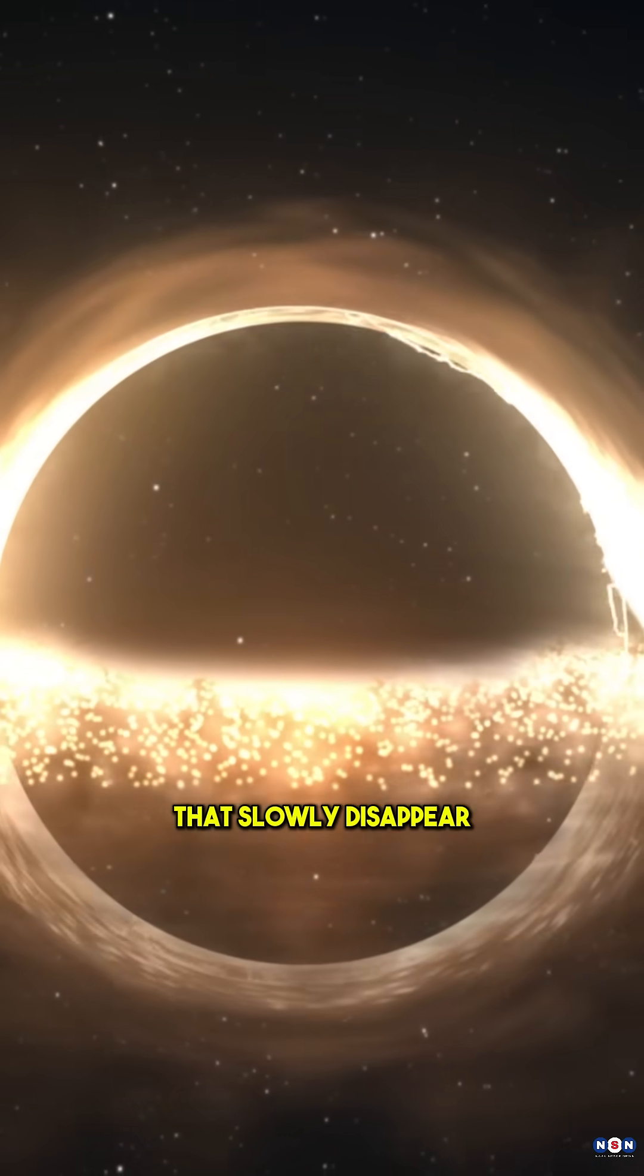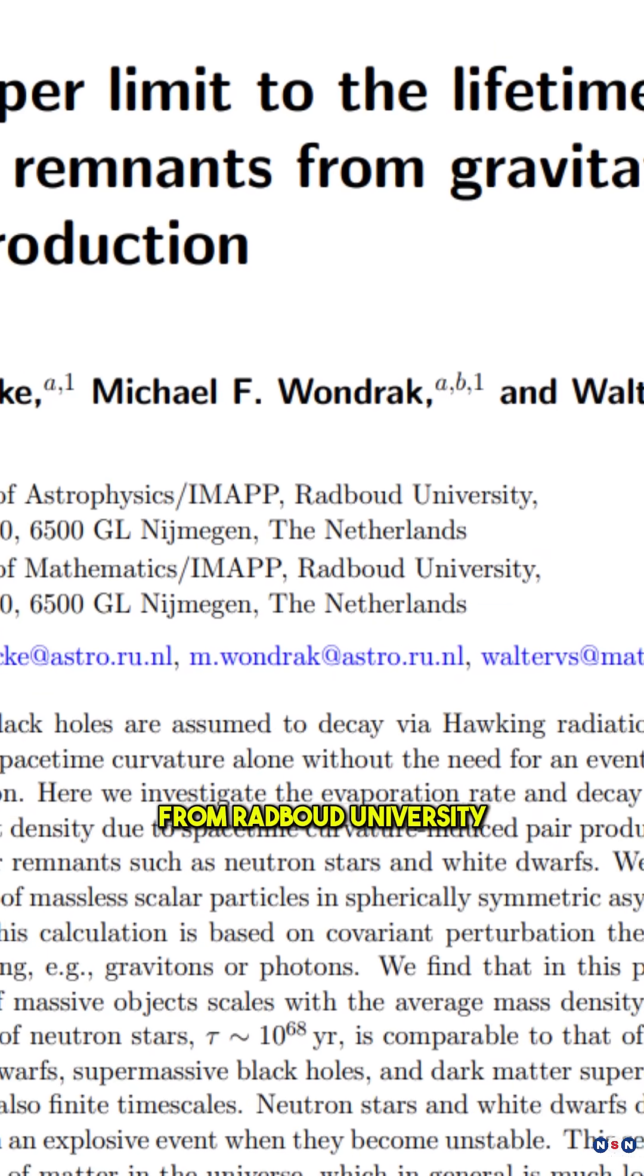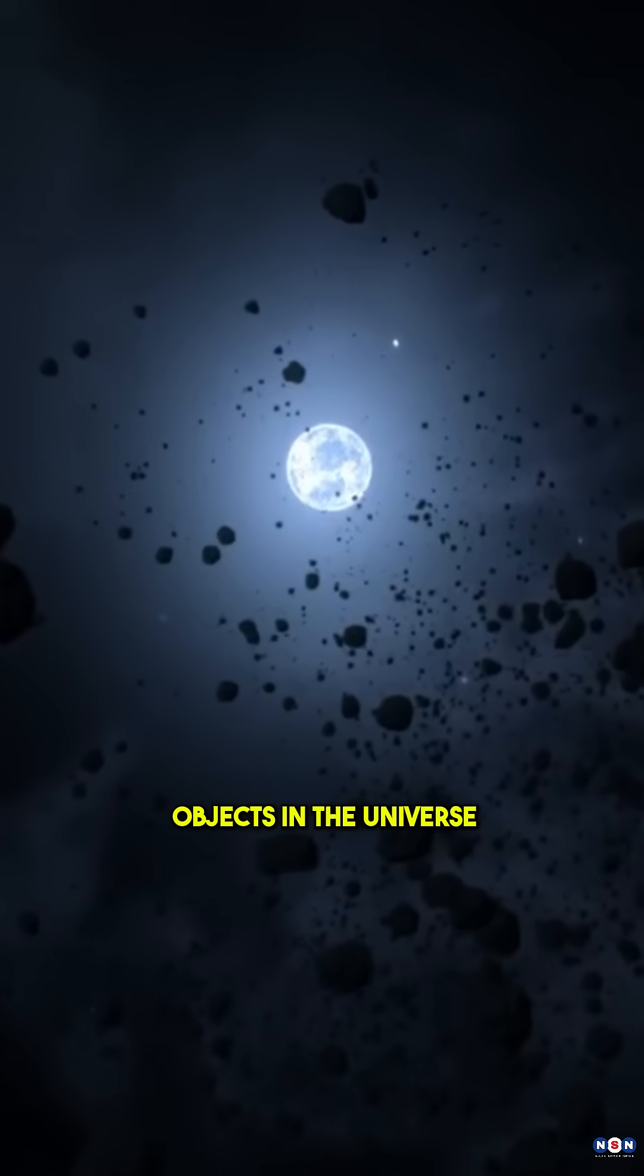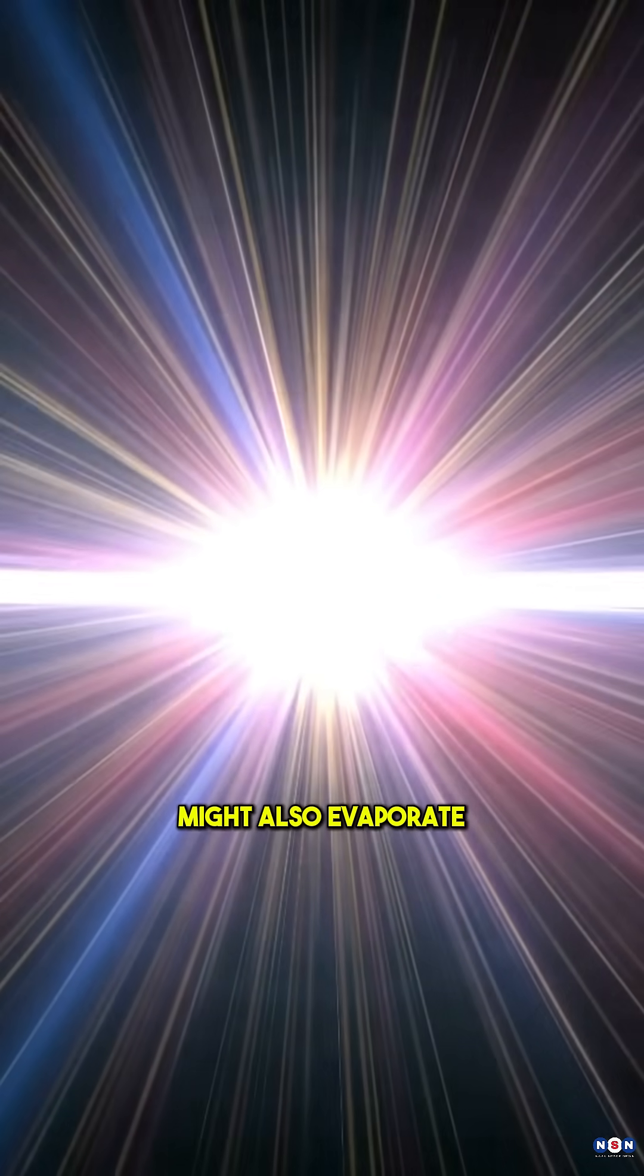Black holes aren't the only things that slowly disappear. According to new research from Radboud University, neutron stars and white dwarfs, some of the densest objects in the universe, might also evaporate over time.